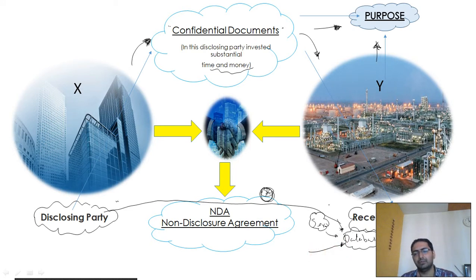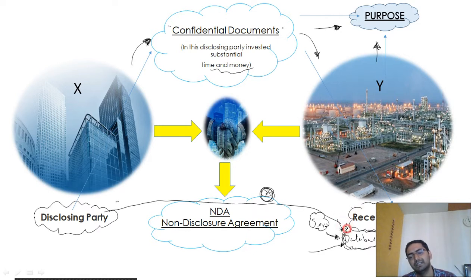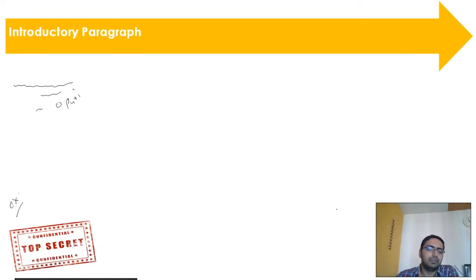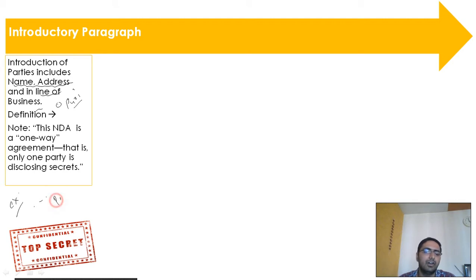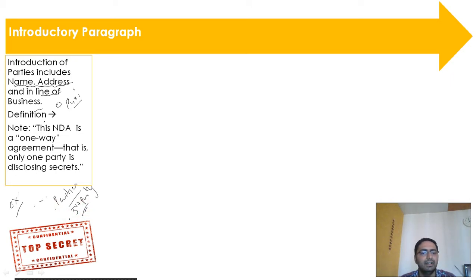To maintain that client database, the receiving party requires software or technology, which they get from the disclosing party — the license holder of that database software. The purpose of this NDA is therefore the maintenance of this database using that technology. The introductory paragraph also defines the parties individually and collectively. They also define third parties, and any other definitions required for the NDA are included here. It's also important to note that normally an NDA is a one-way agreement where the disclosing party gives documents or trade secrets to the receiving party.